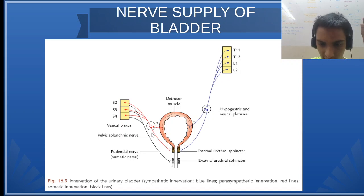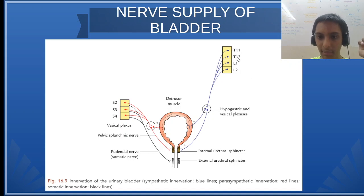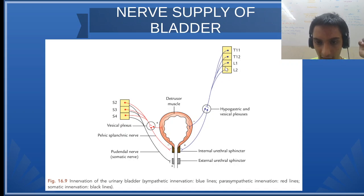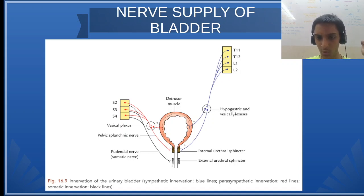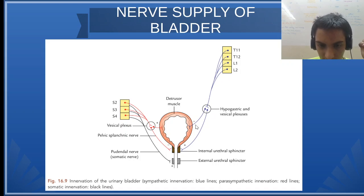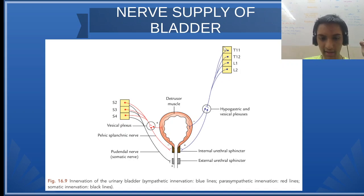Now let us see the parasympathetic. Parasympathetic is coming from T11 to L2 — remember T11 to L2. They will drain into the hypogastric plexus. From these two neurons, one is supplying the detrusor and another is supplying the internal sphincter. This is regarding the nerve supply of the urinary bladder.